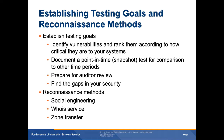When establishing testing goals, you identify vulnerabilities and rank them by criticality, document a point-in-time snapshot for comparisons to other time periods, prepare for audit review, and find gaps in your security. Before any penetration testing, you really need to know your goals and have written approval. It must be well documented what you're doing and why — without it, you can get into serious trouble even if you're trying to help the organization. Reconnaissance methods include social engineering, zone transfers, and various other ways of gathering information. People are the weakest link in a network.